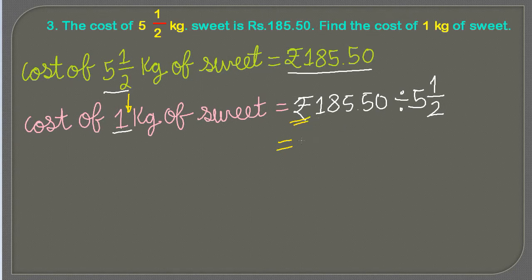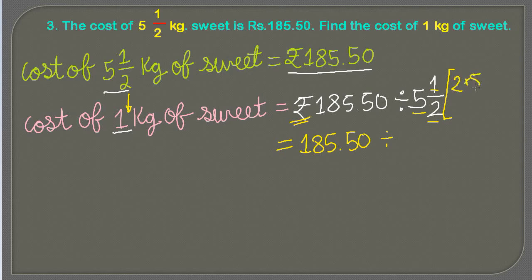So we write: rupees 185.50 divided by five and a half. Since five and a half is a mixed fraction and we can't divide directly, we convert it to an improper fraction. We multiply the denominator by the whole number and add the numerator: 2×5 + 1 = 11, so five and a half becomes 11 upon 2.